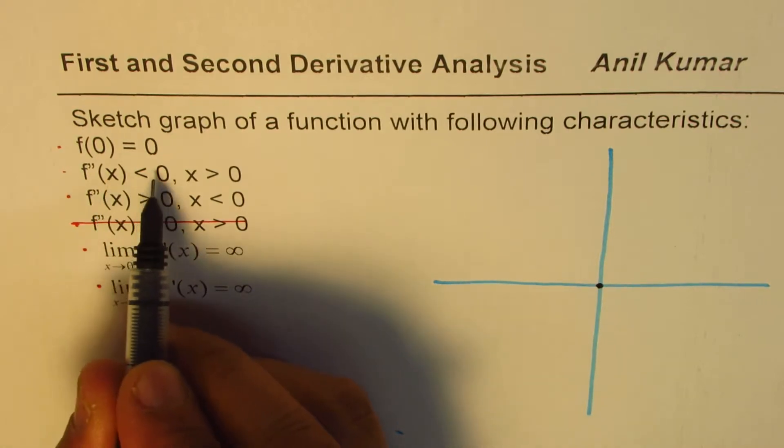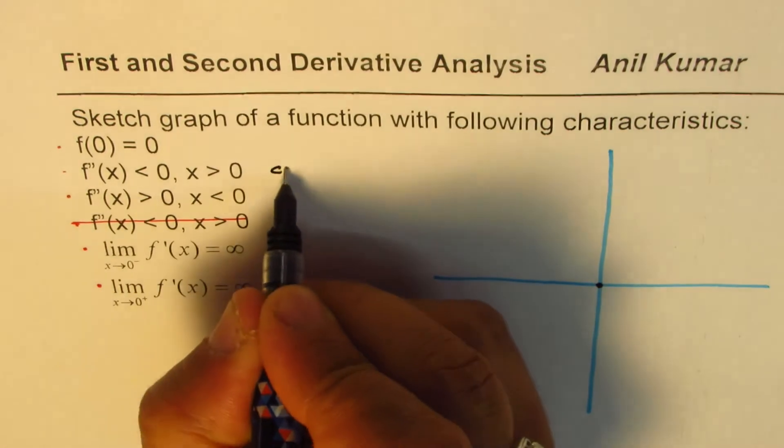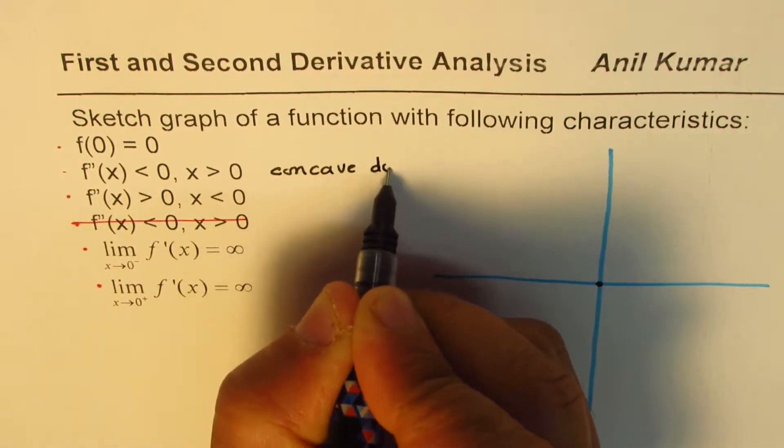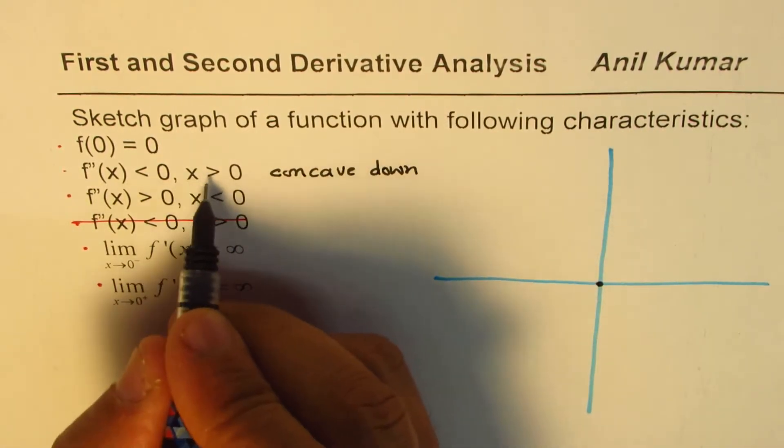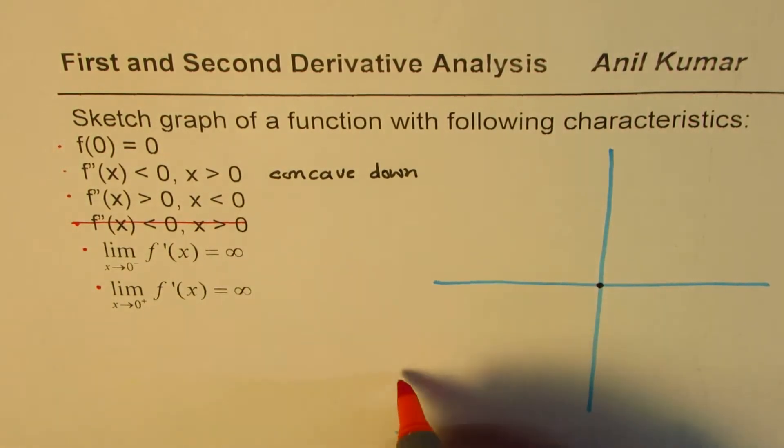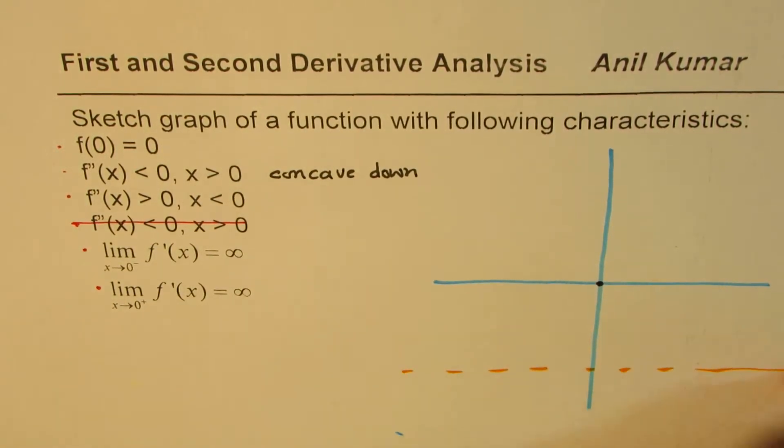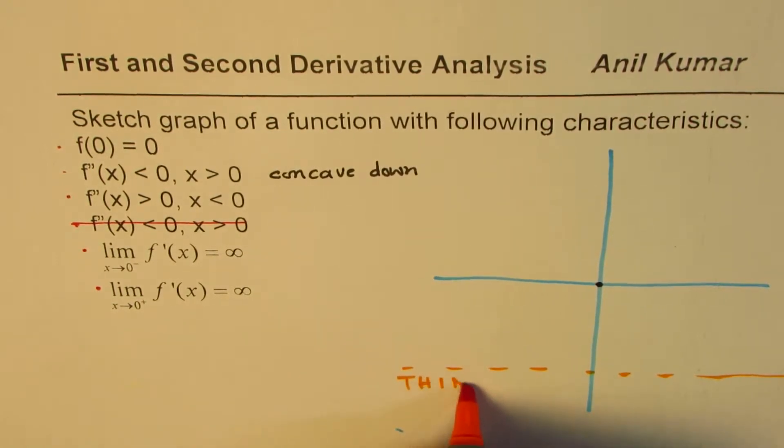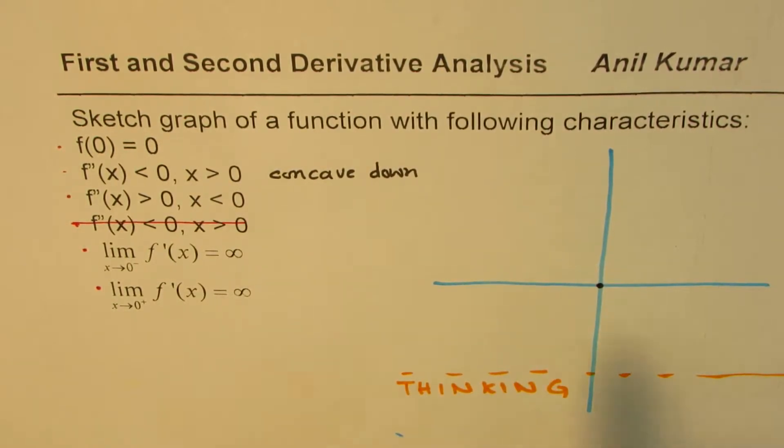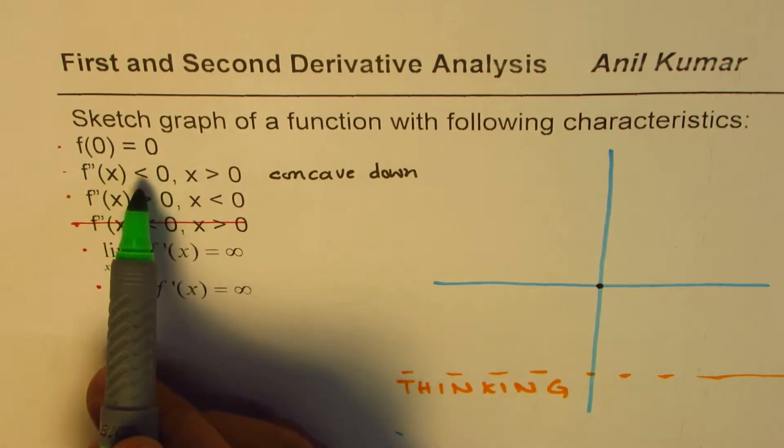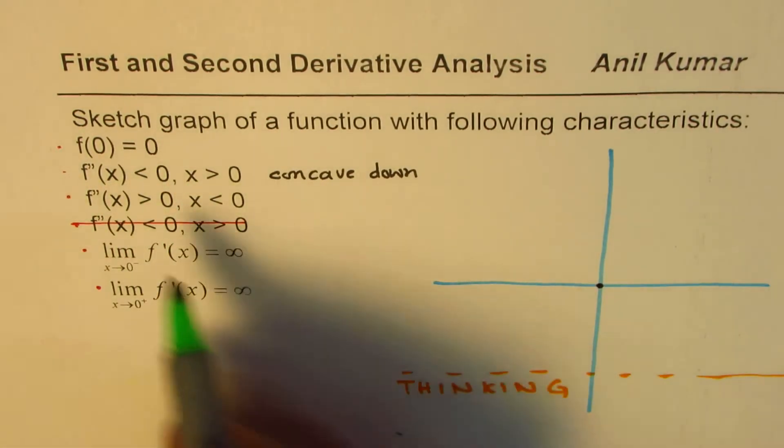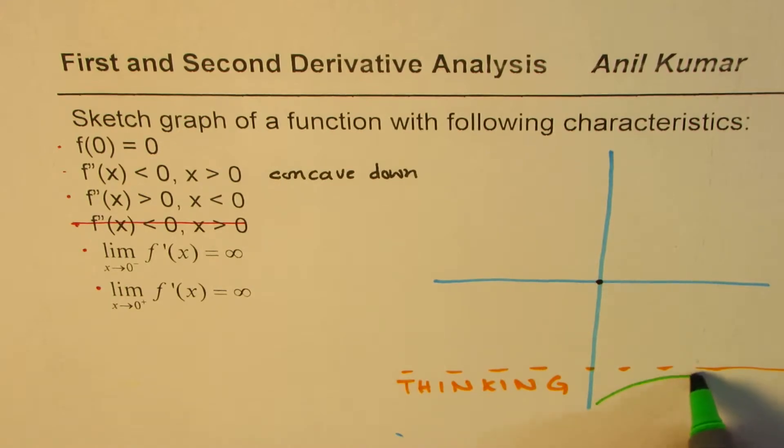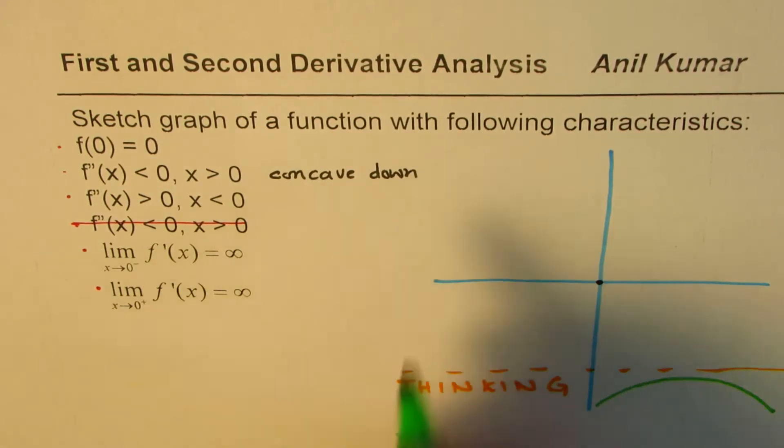Second derivative is less than 0, less than 0 means concave down, that means concave down when x is greater than 0. That is to say, if we consider the lower half, I'm just sketching as my thinking. So here what we are saying is second derivative is less than 0 for x greater than 0. Less than 0 means this structure or the graph will be concave down, right, that is what it means.